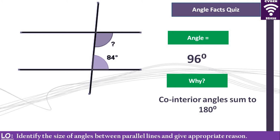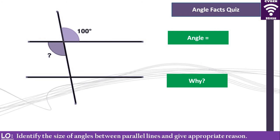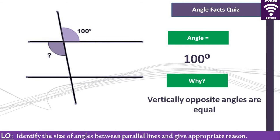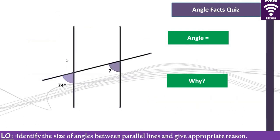Let's look at the next one. What is the size of the angle? It is 100 degrees — well done if you got 100. Why do we say so? They are vertically opposite, so this angle is vertically opposite the other, and therefore they are equal.